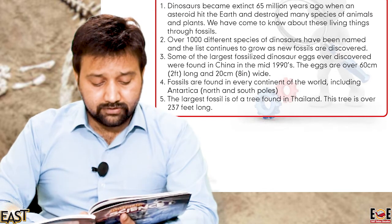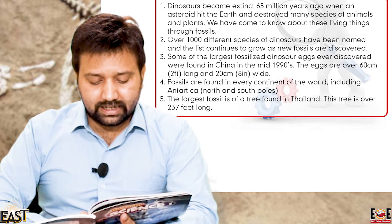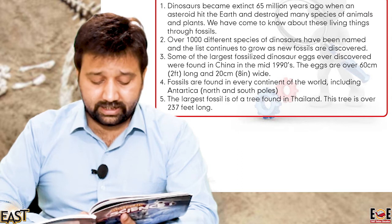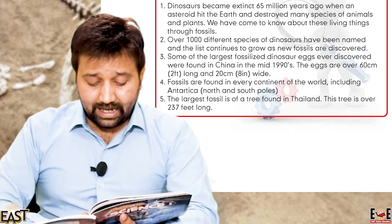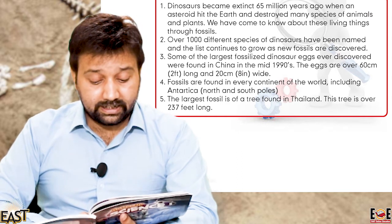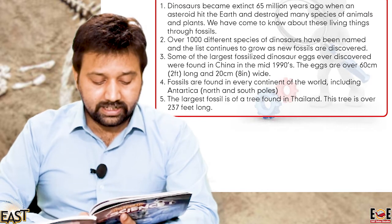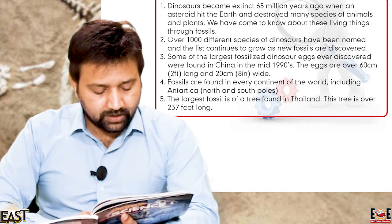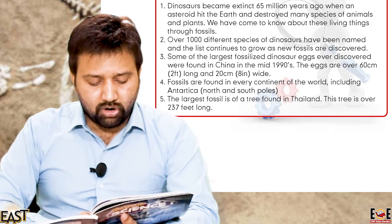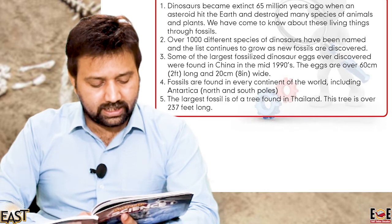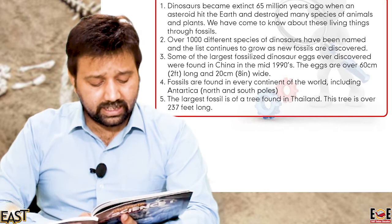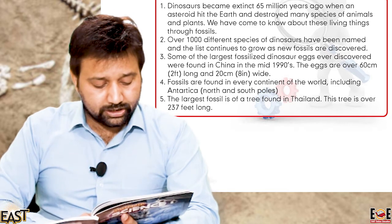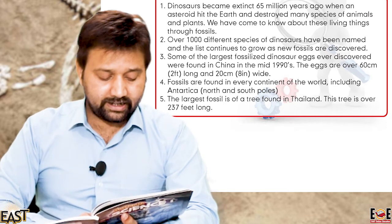Some of the largest fossilized dinosaur eggs ever discovered were found in China in the mid-1990s. The eggs are over 60 centimeters or two feet long and 20 centimeters or 8 inches wide. Fossils are found in every continent of the world, including Antarctica. The largest fossil is of a tree found in Thailand, and this tree is over 237 feet long.